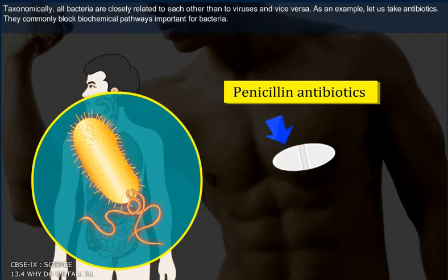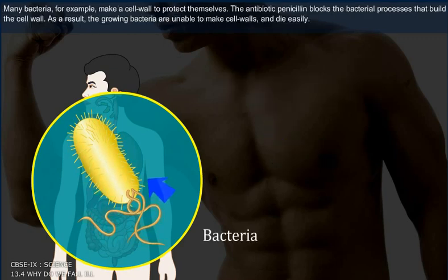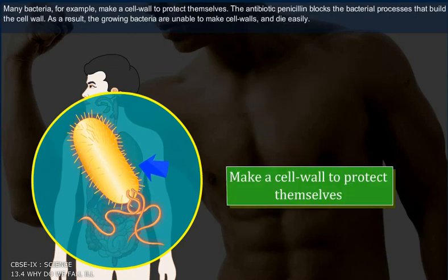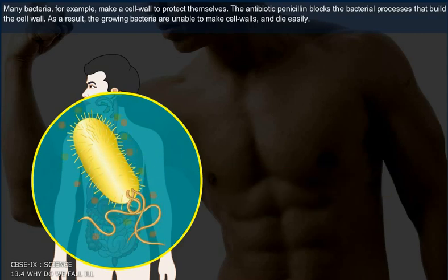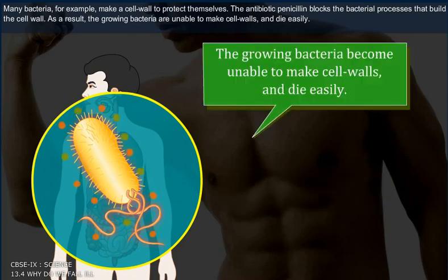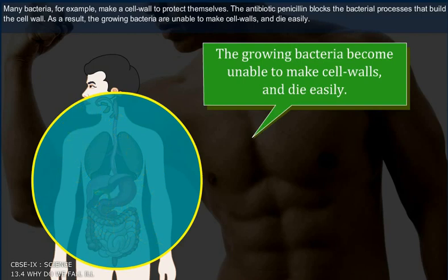As an example, let us take antibiotics. They commonly block biochemical pathways important for bacteria. Many bacteria, for example, make a cell wall to protect themselves. The antibiotic penicillin blocks the bacterial process that builds the cell wall. As a result, the growing bacteria become unable to make cell walls and die easily.